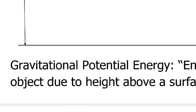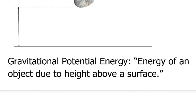Here's the formal definition of gravitational potential energy. It's the energy of an object due to its height, the object's height above a surface.